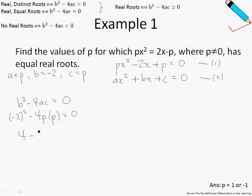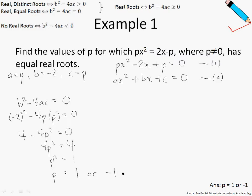Solving this — shifting the 4p squared over to the right-hand side, I get p squared equals 1. To solve for p, take the square root of 1 on both sides of the equation, and we end up with p equals 1 or negative 1. Therefore, the values of p are 1 or negative 1.